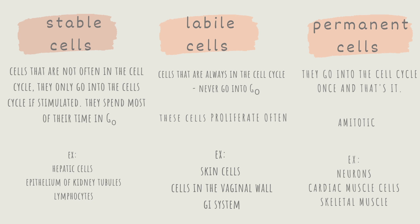Labile cells are cells that are constantly in the cell cycle and never go into the resting phase or G0. These cells proliferate often, meaning they reproduce rapidly. Example of these cells are skin cells, cells in the vaginal wall and cells that are in the GI tract.